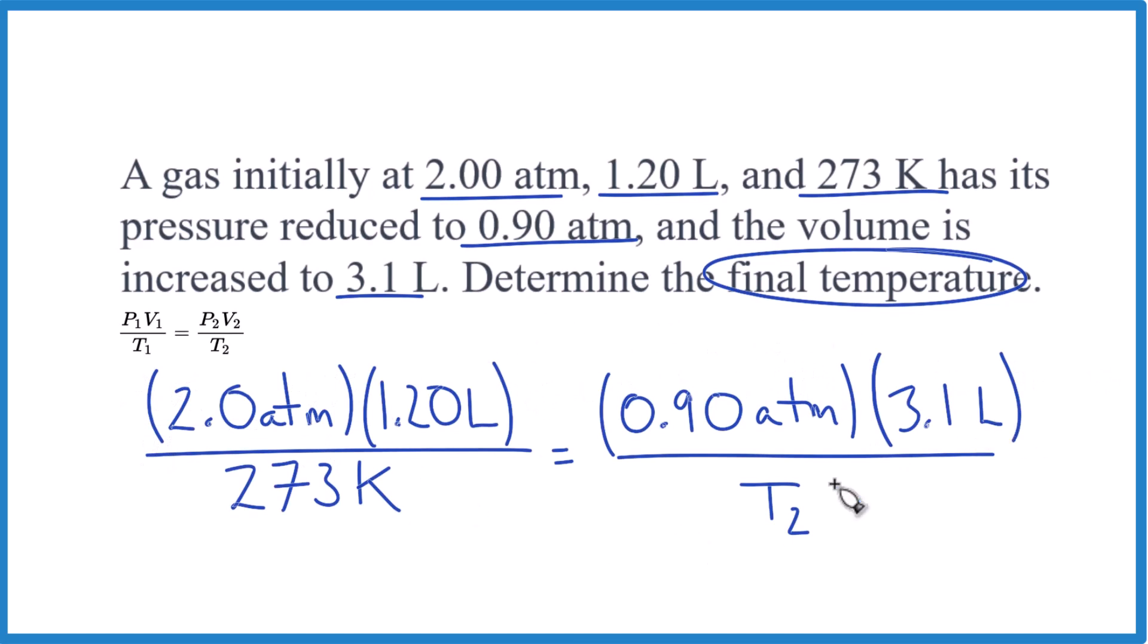So I put everything in here, and now I just need to get T2 by itself, but I want it on top. I'll multiply both sides by T2, and that way these cancel out and I have it on the top over here.